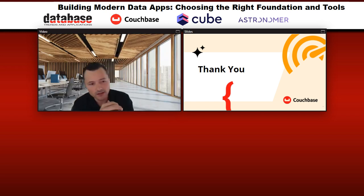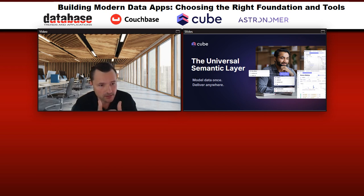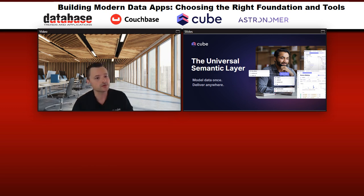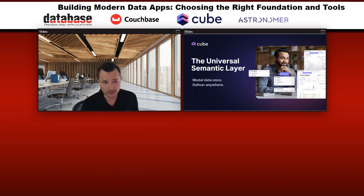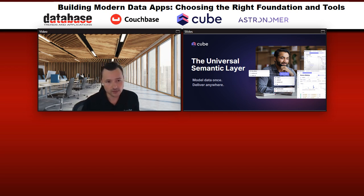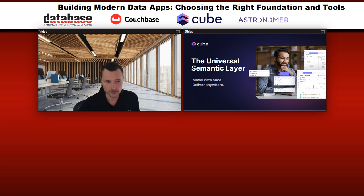Thank you, Mark. It's good to meet you all. My name is Artem. I'm co-founder and CEO at a company called Cube. My background is in data engineering. I built Cube as an open source project in 2019, and then in 2020, my co-founder and I built a company around it. Cube is open source technology that's been around for five years. You can find us on GitHub with a big Slack community of data engineers and developers. Today I'll talk about what we call a universal semantic layer and why I built Cube in the first place.